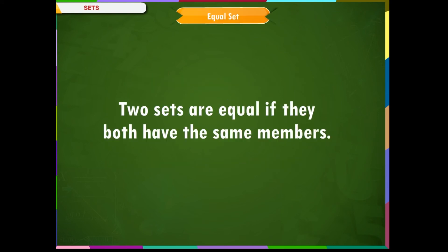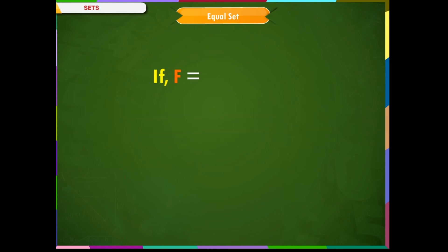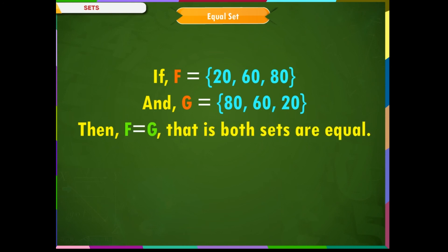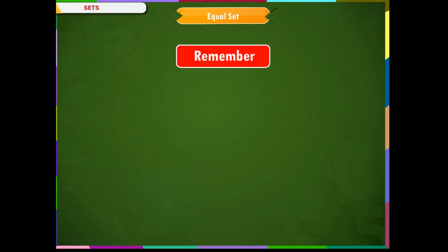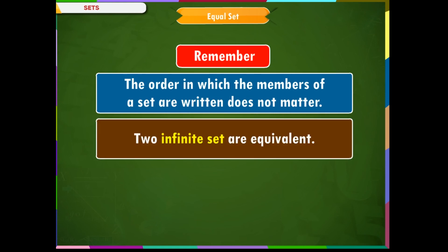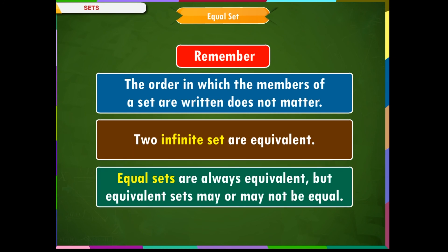Equal set. Two sets are equal if they both have the same elements. Example: if F = {20, 60, 80} and G = {80, 60, 20}, then F = G. Remember, the order in which the members of a set are written does not matter. Two infinite sets are equivalent. Equal sets are always equivalent, but equivalent sets may or may not be equal.